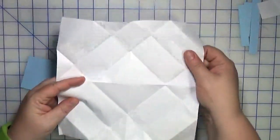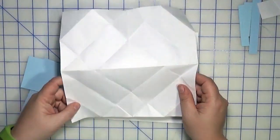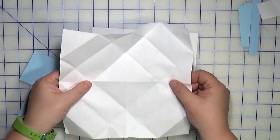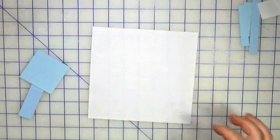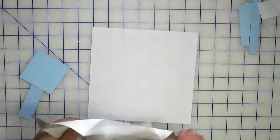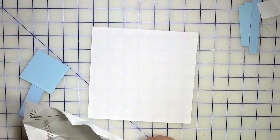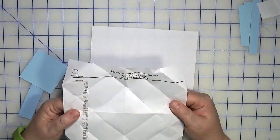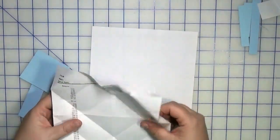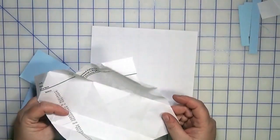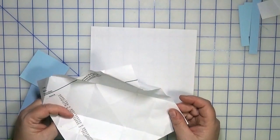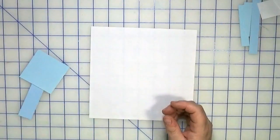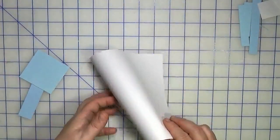I started off with an 8.5 by 8.5 inch square and that resulted in a 3 by 3 inch box. I dropped it to 7.5 by 7.5 and that resulted in a 2.75 inch box.